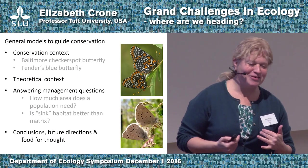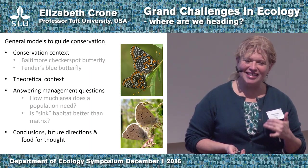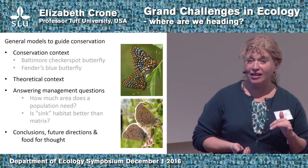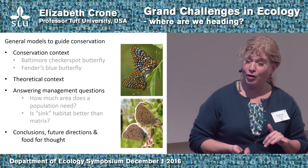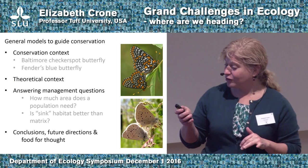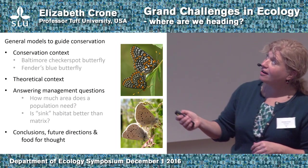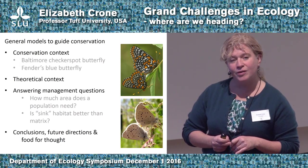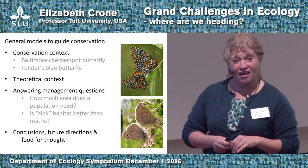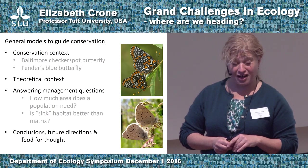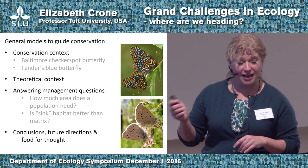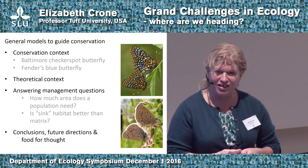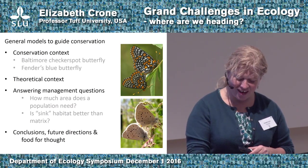The outline of the rest of my talk: I'll use some general abstract models to guide conservation. First, I'll introduce you to conservation problems about the management of two populations of endangered butterflies — the Baltimore checkerspot butterfly and the Fender's blue butterfly. I'll then give you the theoretical context of some general models we might use to guide management, and then use them to answer two management questions. I'll talk about what we've learned, some future directions, and some things for you to think about.